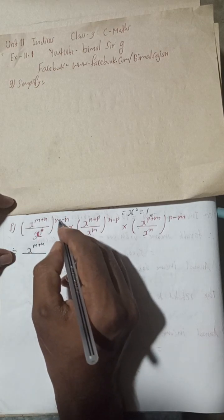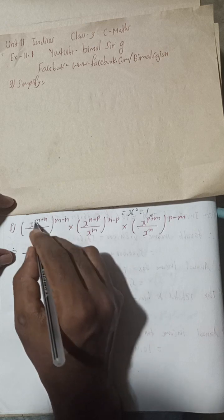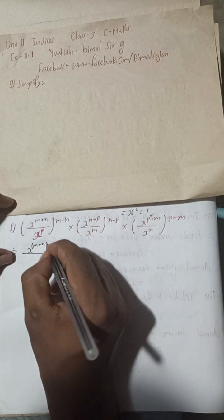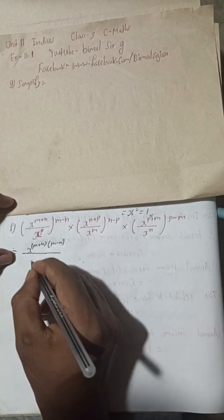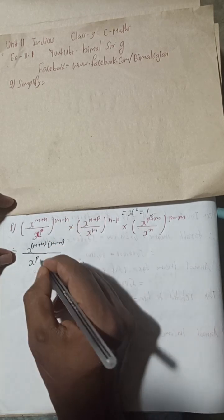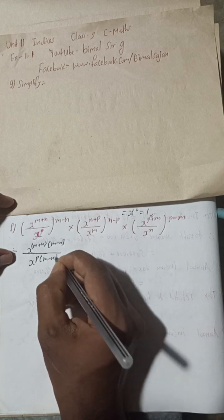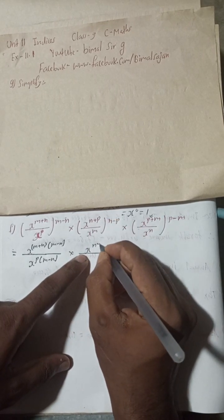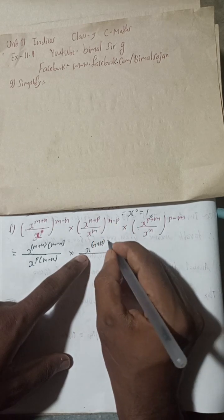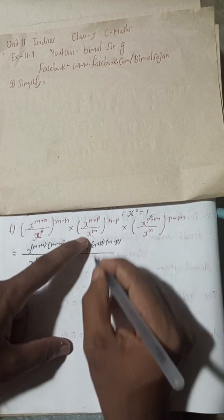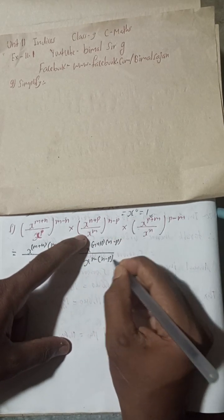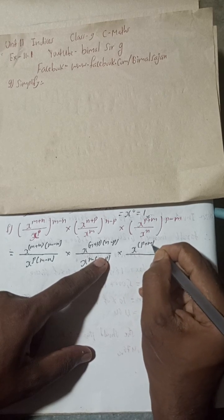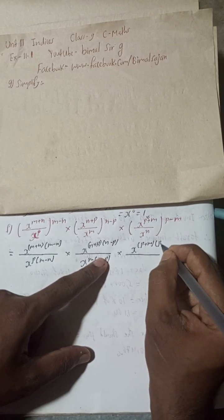For the first part, the whole power (m−n) applies to both numerator and denominator, so we write x to the power (m+n)·(m−n) over x to the power p·(m−n). Similarly for the second part: x to the power (n+p)·(n−p) over x to the power m·(n−p), and for the third part: x to the power (p+m)·(p−m) over x to the power n·(p−m).